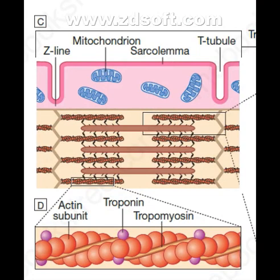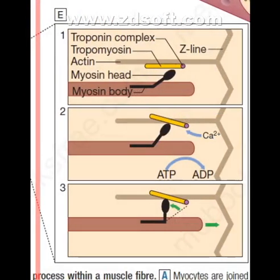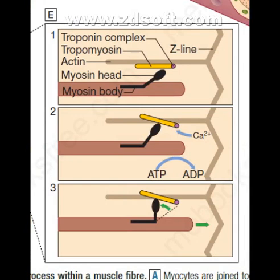There is an actin subunit, troponin, and tropomyosin. The E diagram shows the troponin complex, tropomyosin, actin, myosin head, and myosin body. There is the Z-line, calcium, and the conversion of ATP to ADP.